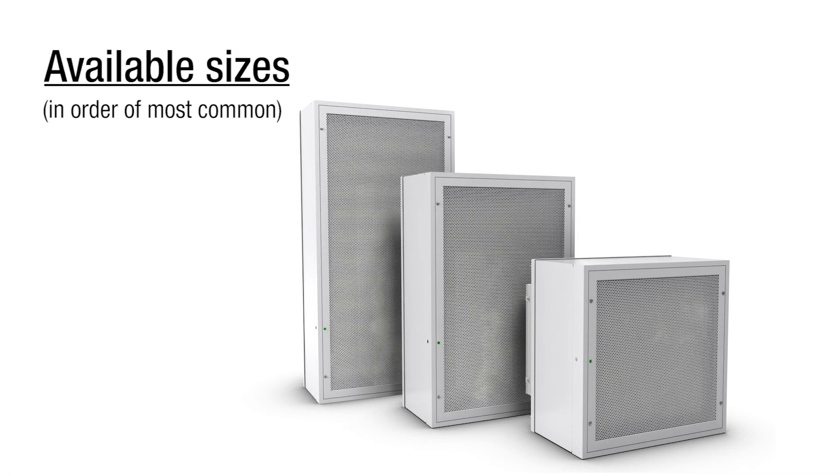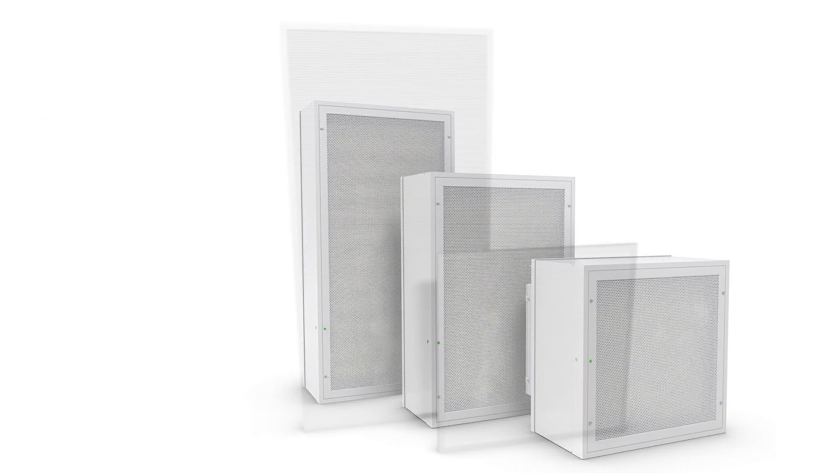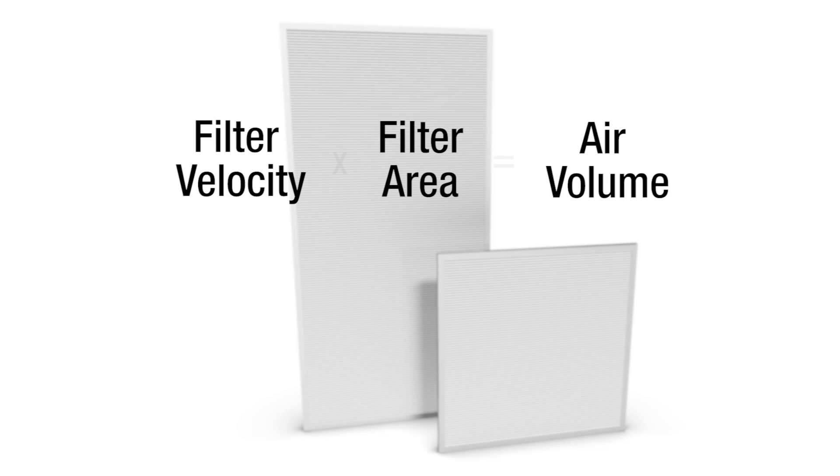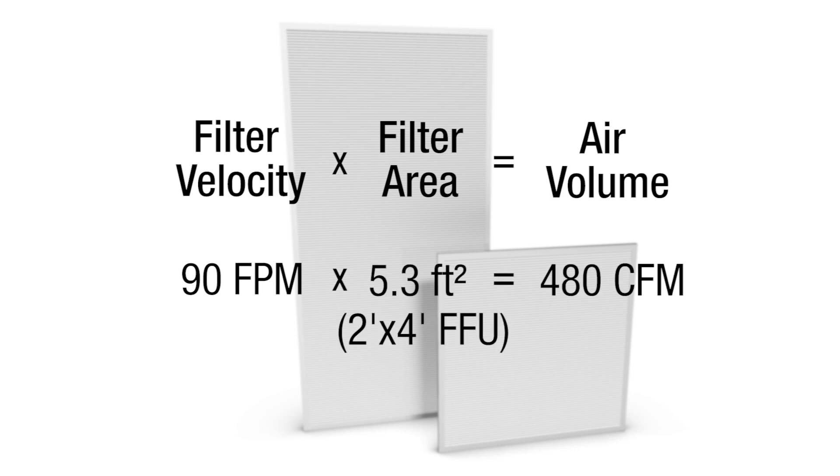FFUs are typically available in three sizes: 2' x 4', 2' x 2', and 2' x 3', and are designed to fit into a standard suspended ceiling grid. FFUs are typically sized for 90-100 feet per minute filter velocity. For the most popular size of 2' x 4', this equates to 480 CFM for a room-side replaceable filter model.